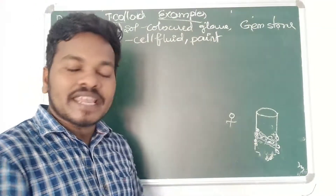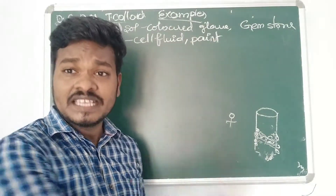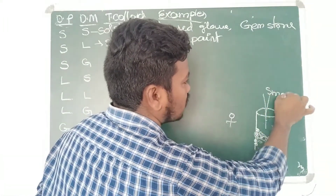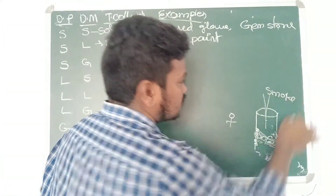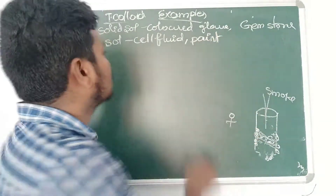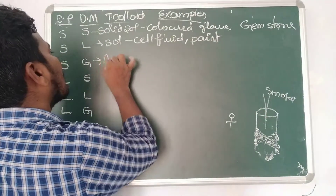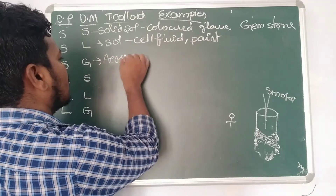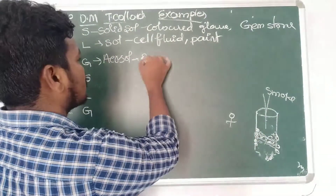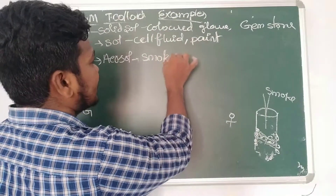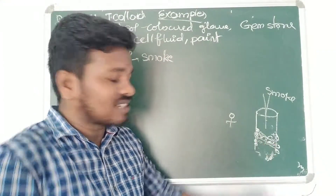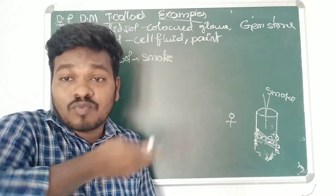Again he is heating, and whenever he heats, some smoke comes outside. That smoke goes into the air. So write that down — this is called an aerosol. What came outside? Smoke. So smoke going to air gives us the aerosol example.